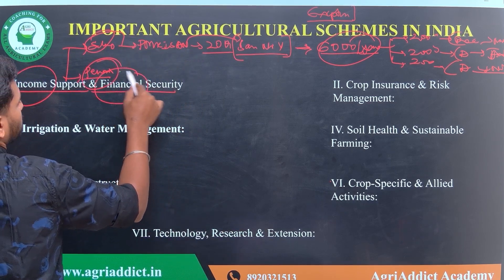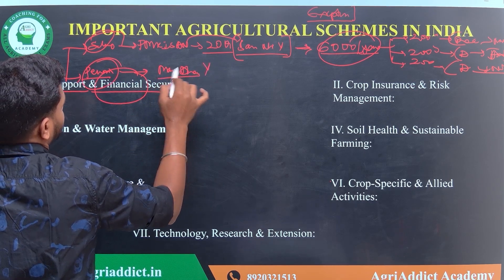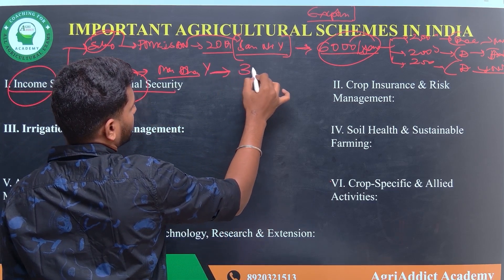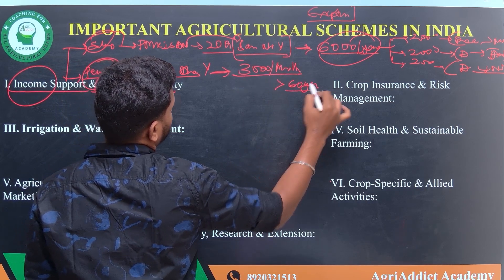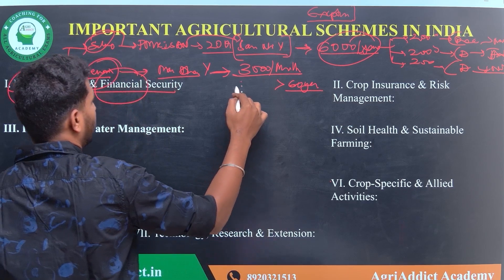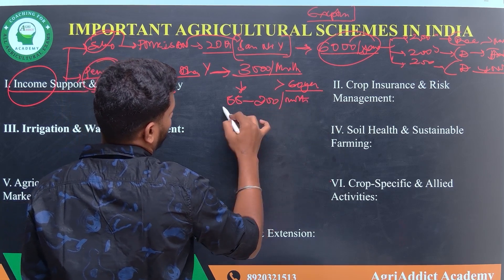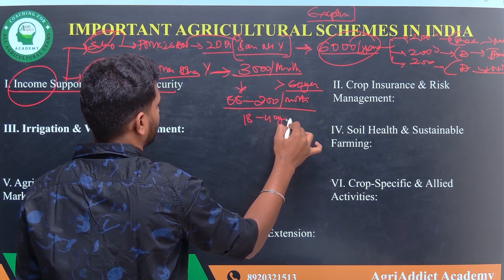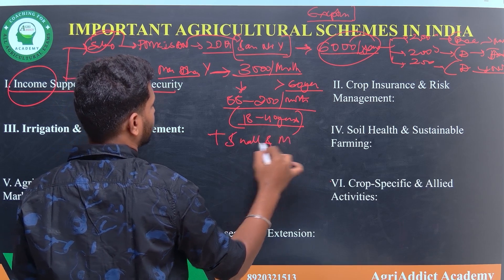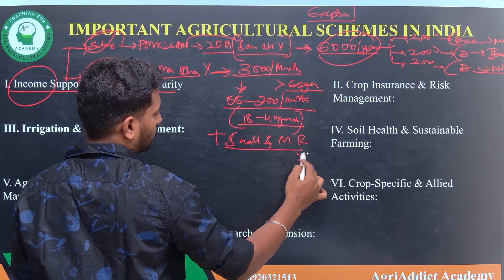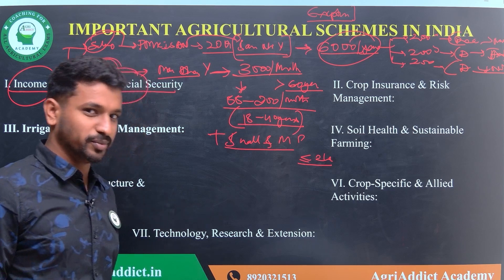The second scheme regarding the pension is PM Kisan Mandan Yojana. According to this scheme, a farmer will get ₹3000 per month when he attains the age of 60. For this, they have to pay a premium amount ranging from ₹55 to ₹200 every month. This is eligible for farmers aged 18 to 40 years, and very importantly, it is only for small and marginal farmers who have land up to 2 hectares.